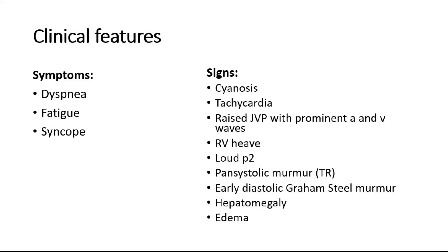On auscultation of the heart, we can hear a pansystolic murmur, which is due to tricuspid regurgitation. We might also hear an early diastolic Graham Steell murmur. On abdominal examination, you can look out for hepatomegaly, and edema can also be seen on the legs.